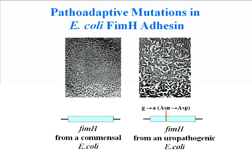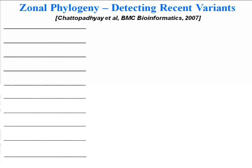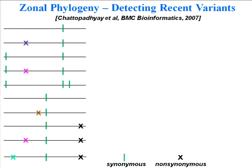This led us to analyze FimH sequences from a larger dataset of E. coli strains isolated from diverse clonal backgrounds or ecotypes. We used our zonal phylogeny analysis — the one we developed to detect recent positive selection. Let us consider 10 sequences that accumulate synonymous variations at different points and also a number of non-synonymous variations. Synonymous variations do not alter the corresponding amino acid sequence; non-synonymous ones do alter the amino acid sequence — these are the structural changes.